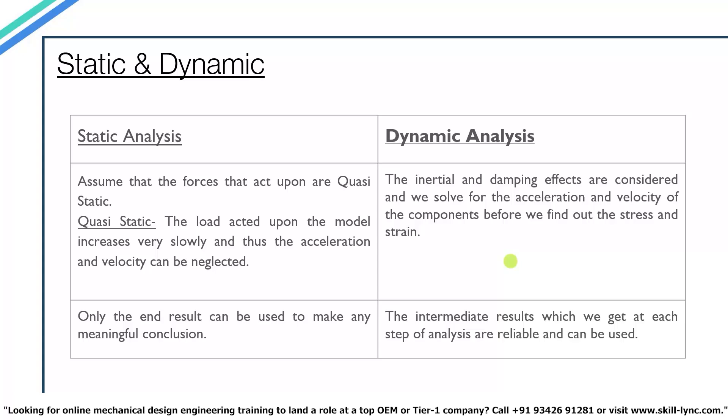In static analysis, when we start a simulation at point A we get an end result at point B. Because of this fixed delivery of results, any data between points A and B cannot be relied upon — only the end result can be used to make a meaningful conclusion. In dynamic analysis, the intermediate results at each step are reliable and can be used.